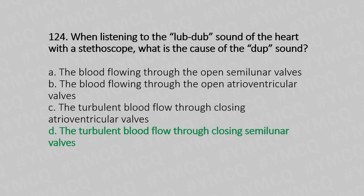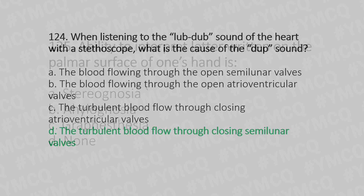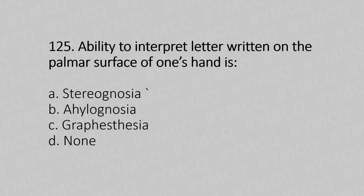Question number 125: The ability to interpret a letter written on the palmar surface of one's hand is — Option A: stereognosis, Option B: graphanesthesia, Option C: graphesthesia, Option D: none. The answer is Option C, graphesthesia.